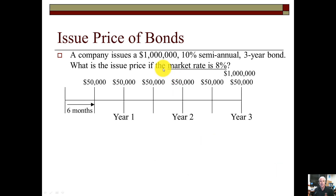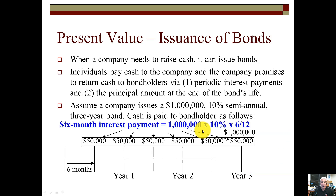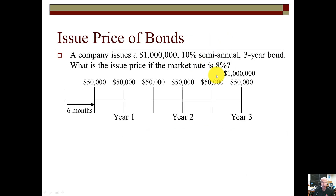The issue price of the bond is going to vary based on the market rate of interest — this is very crucial. When we present value a bond, we always use the market rate of interest. In this particular case, the market rate is 8%, and the bond has a 10% stated rate. So there are two interest rates in a bond problem. We use the stated rate only to calculate the interest payment using PRT — principal times rate times time. However, when we discount the bond and present value it, the discount rate we use is the market rate of interest.